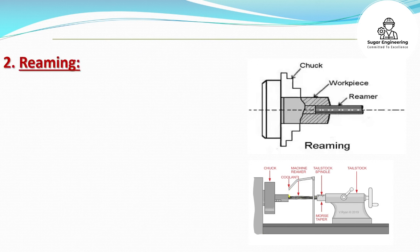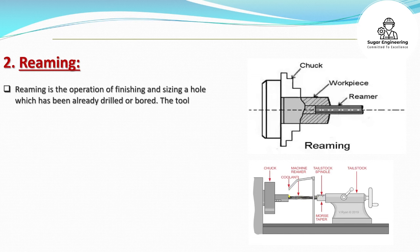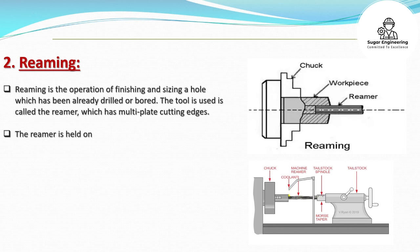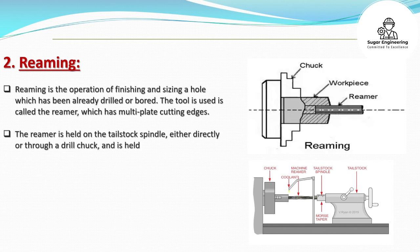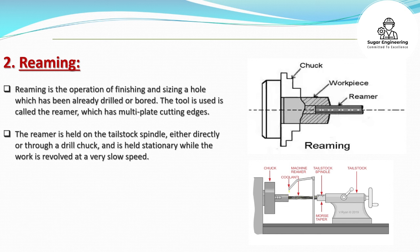Reaming is the operation of finishing and sizing a hole which has already been drilled or bored. The tool used is called the reamer, which has multiple cutting edges. The reamer is held on the tail stock spindle, either directly or through a drill chuck, and remains stationary while the work is revolved at a very slow speed.